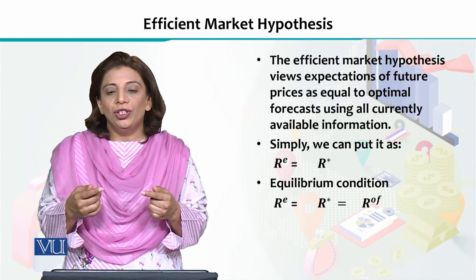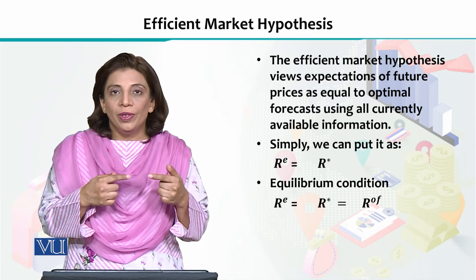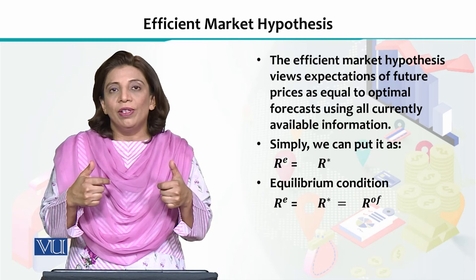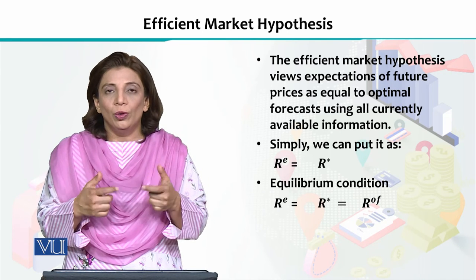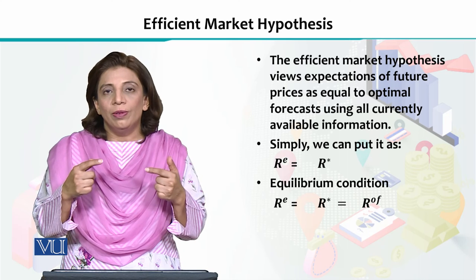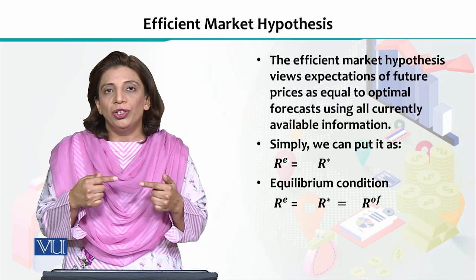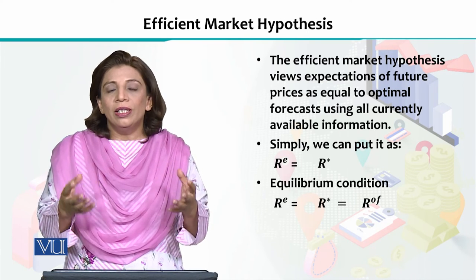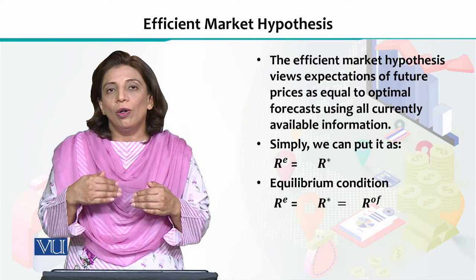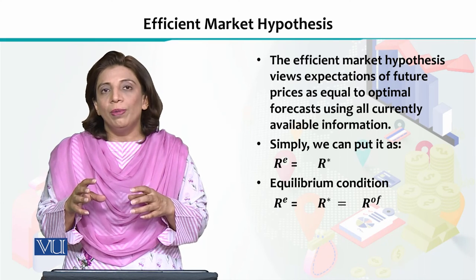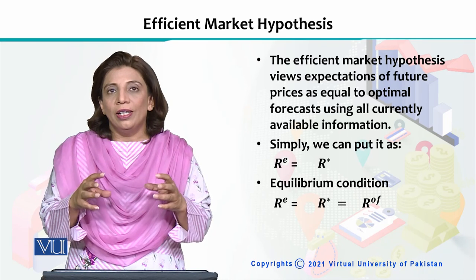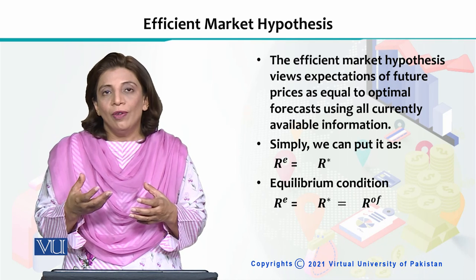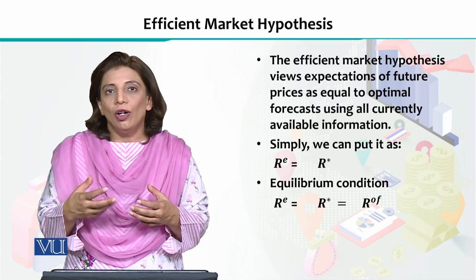Essentially, the equilibrium rate is the rate where the optimal forecasted value becomes equivalent to the current return value. Since people are clear about the information and the fluctuations or movements that are going to occur in the market pertaining to a certain stock, they consider and utilize that information to determine an optimal forecasted return, which helps in establishing the equilibrium level of returns that can be earned from a certain stock or security.